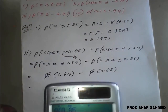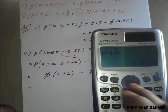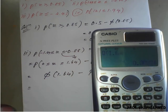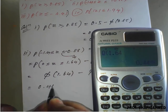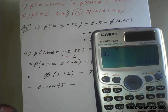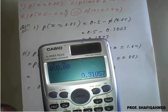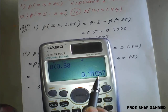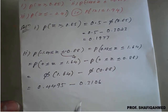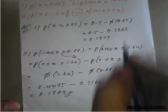Using the calculator: phi(1.64) equals 0.4495. Then phi(0.88) equals 0.3106 (rounding up since the next digit is 7, making it 0.3106). Subtracting: 0.4495 minus 0.3106 gives the answer 0.1389. This is the second result.